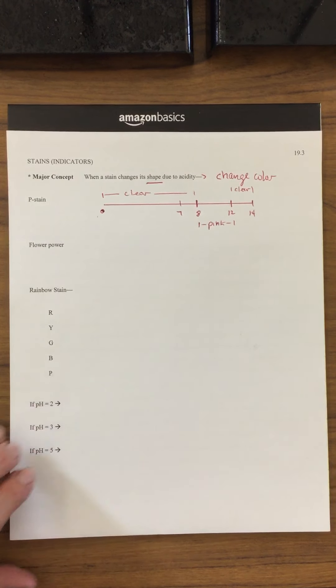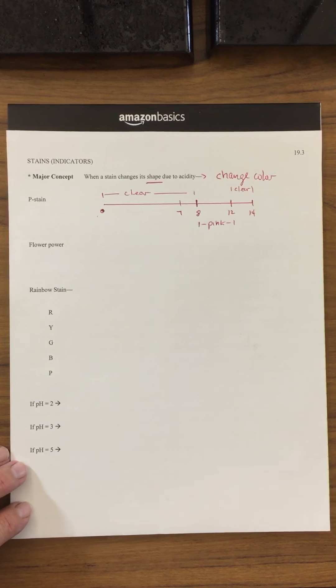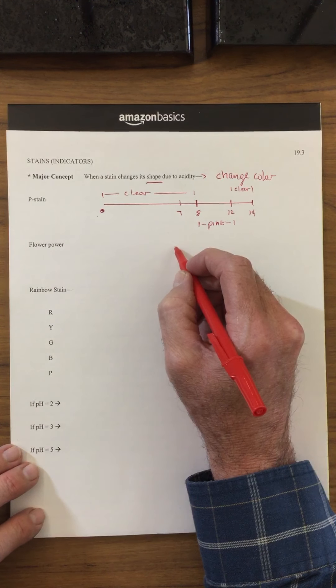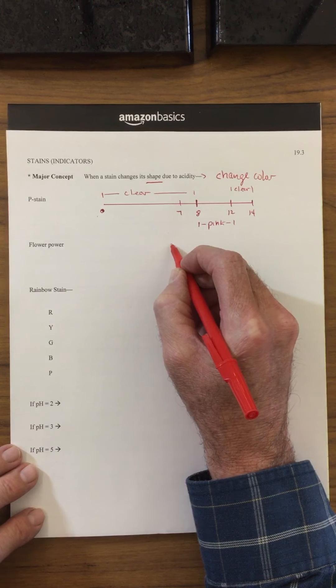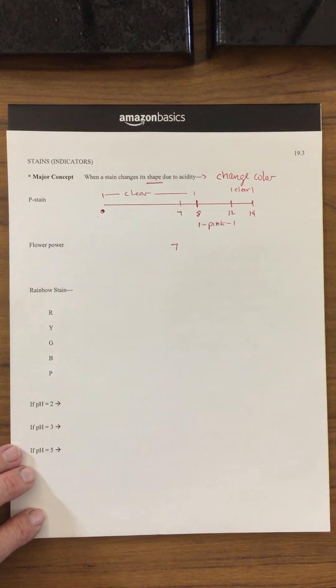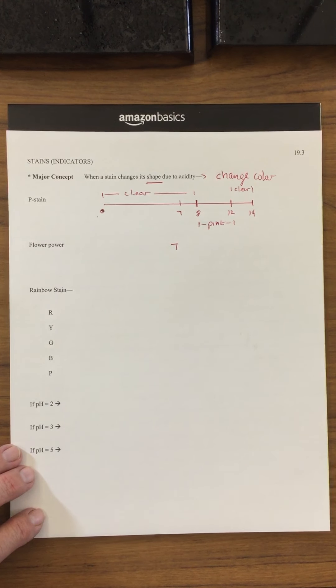So what's happening with the flower power? Well, what we're doing is we're starting off with the stain and it's really at a neutral, so it's starting off at 7. That's what the pH is with the flower when it started off white.